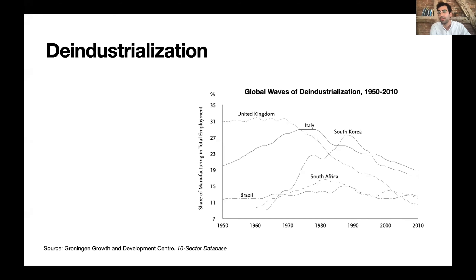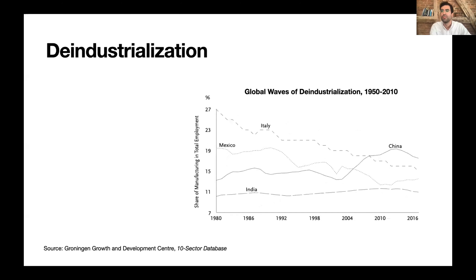The question is: is this the result of technology? China, in spite of what people often think, had a major burst of industrialization measured as a share of manufacturing employment — a burst around 2003 — but it ended by 2013, and since then China, like India, has been deindustrializing in employment terms.